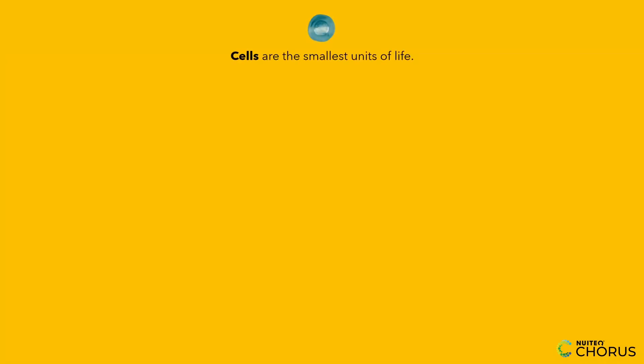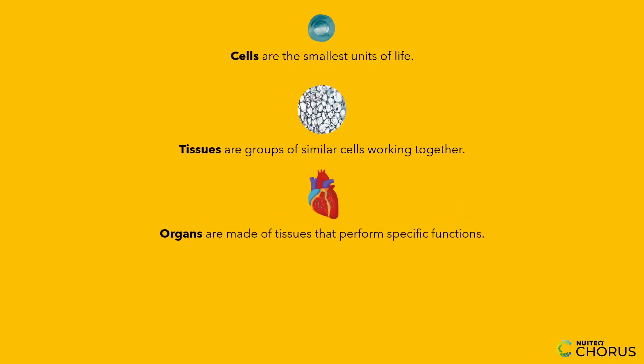Cells are the smallest units of life. Tissues are groups of similar cells working together. Organs are made of tissues that perform specific functions. Systems are groups of organs working together.